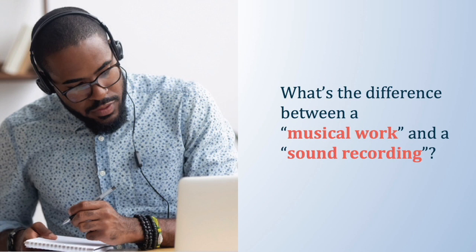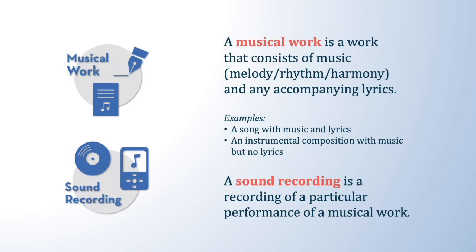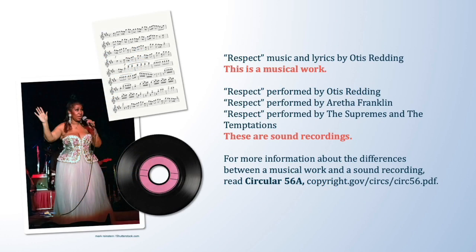What's the difference between a musical work and a sound recording? A musical work, such as a song with music and lyrics, and a particular recording of that song are two separate works under the copyright law. A musical work consists of the music — which may include melody, rhythm, and/or harmony — as well as any accompanying lyrics. A recording of a particular performance of a song is a sound recording. For example, the music and lyrics for the song 'Respect' and a recording of Aretha Franklin performing that song are two distinct works. The music and lyrics are the musical work, and a recording of an artist performing the music and lyrics is a sound recording.